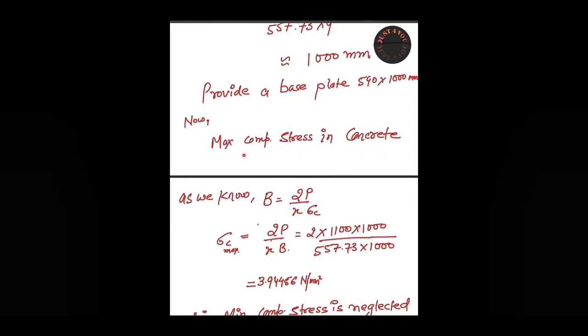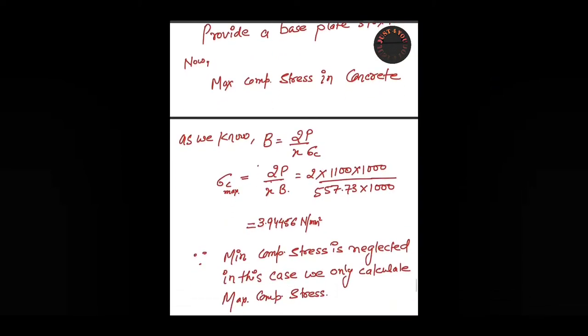Now we calculate the maximum compressive stress in concrete. The equation 2P/(x·b) becomes 2P/(x·b) because the minimum compressive stress is neglected at the far end. Putting the values of P, x, and b, we get the maximum stress of 3.94456 N/mm².